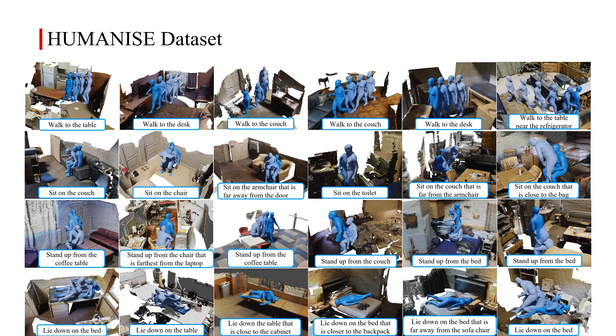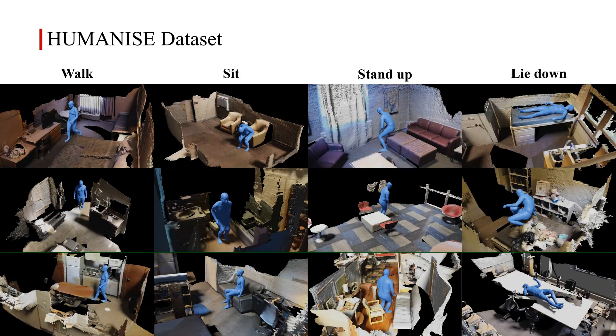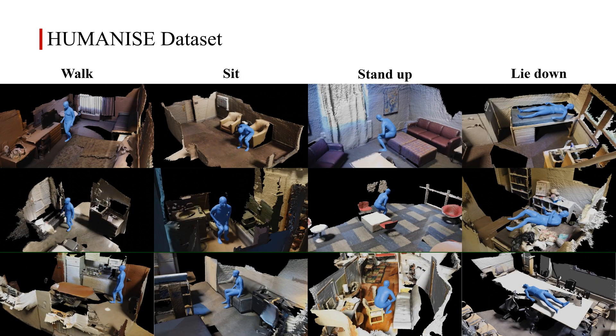Here we show some examples from Humanize, including four actions: walk, sit, stand up, and lie down. Each motion segment has rich semantics about the action type and the corresponding interacting objects specified by the language description. We also render some selected motions into videos for better visualization.